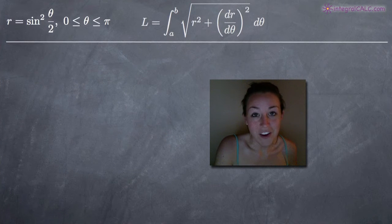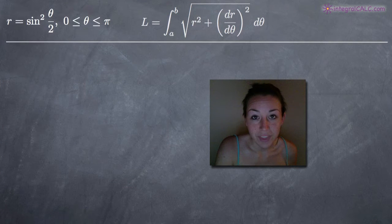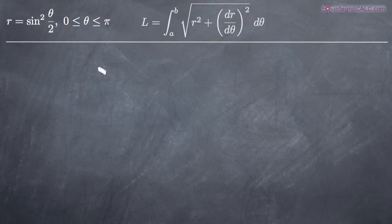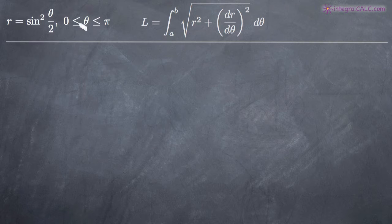Today we're going to be talking about how to find the arc length of a polar curve. In this particular problem, we've been given the polar curve r equals sine squared of theta over two, and we've been asked to find the arc length of that curve on the range theta greater than or equal to zero, less than or equal to pi.